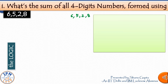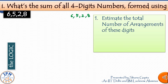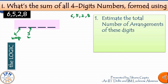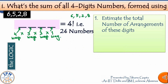The first step in such questions is to estimate the total number of arrangements of these digits. We have four digits to be arranged — 6, 5, 2, and 8 — together occupying four places. The first place can be filled in four ways, the second in three ways, the third in two ways, and the last in only one way. By the fundamental rule of counting, these four places can be filled in 4 × 3 × 2 × 1, that is 4! = 24 ways. Therefore, there are 24 numbers possible.